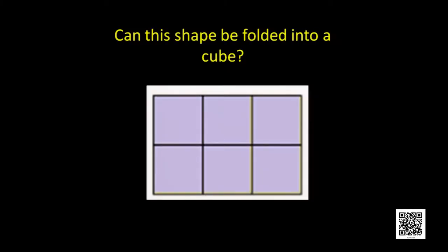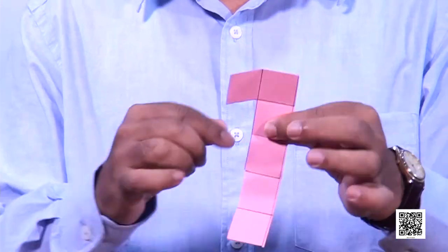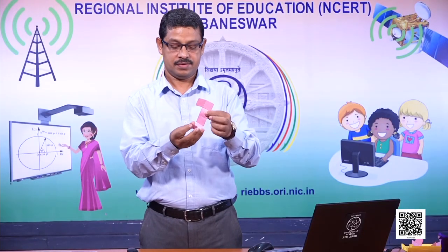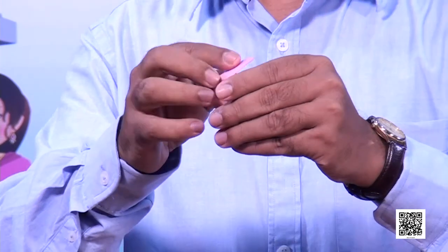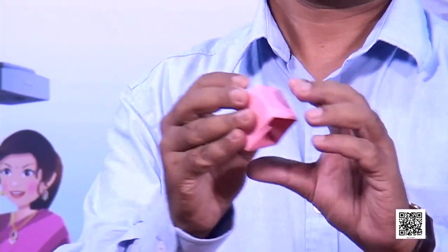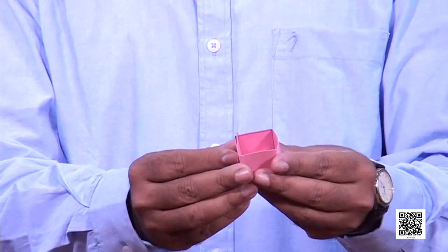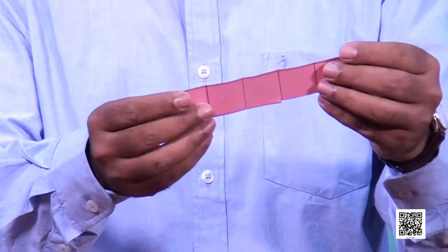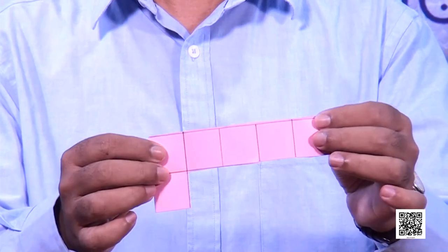Now see this shape — it is different from the previous one. I am folding it along the dotted lines to find out whether it can be folded into a cube or not. You see, here one extra part remains, and here it is remaining open. So this shape cannot be folded into a cube. Though there are six faces, when I fold along the dotted lines, it does not form a cube.